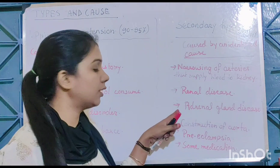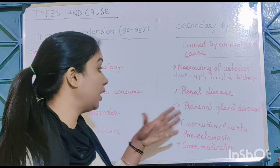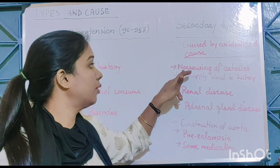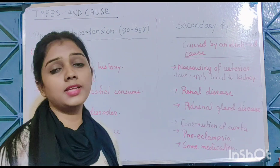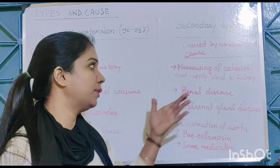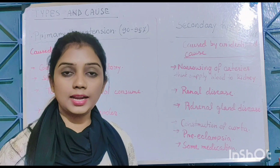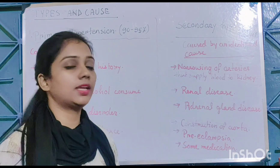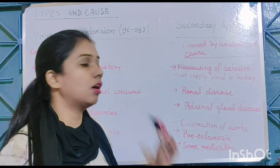Adrenal gland disease can also cause secondary hypertension. Additionally, coarctation of the aorta, pre-eclampsia — a condition occurring during pregnancy — and certain medications such as contraceptive pills and illegal medication intake are all causes of secondary hypertension.